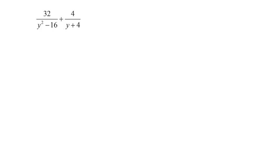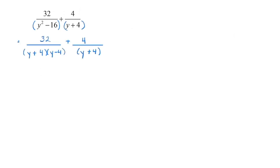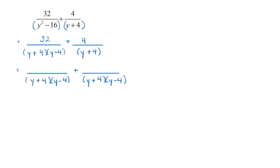So we can see we have an algebraic expression that we're going to simplify involving addition. They all start the same way — we're going to bracket our binomials and then factor them. Once they're fully factored, we're going to find our lowest common denominator. We can see that each of them contain a factor of y plus 4, and we also have a factor of y minus 4. So our lowest common denominator is going to be y plus 4 times y minus 4.